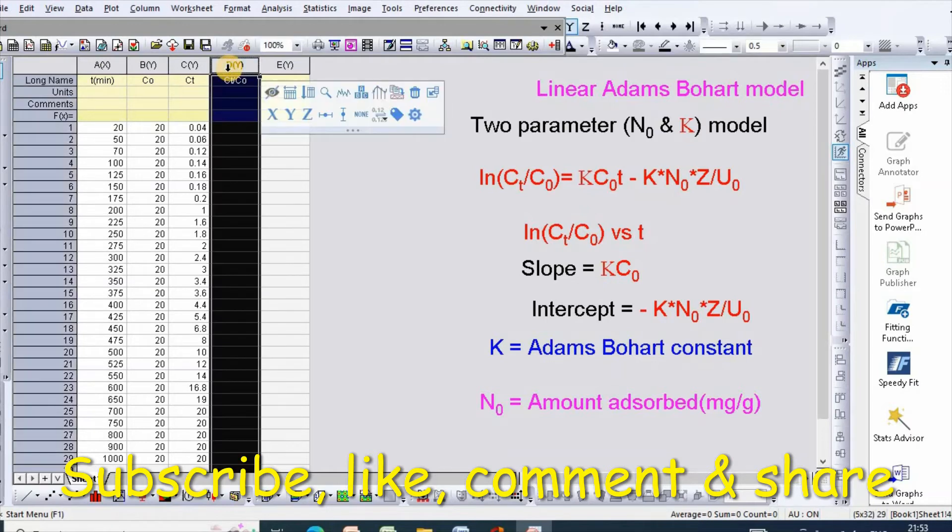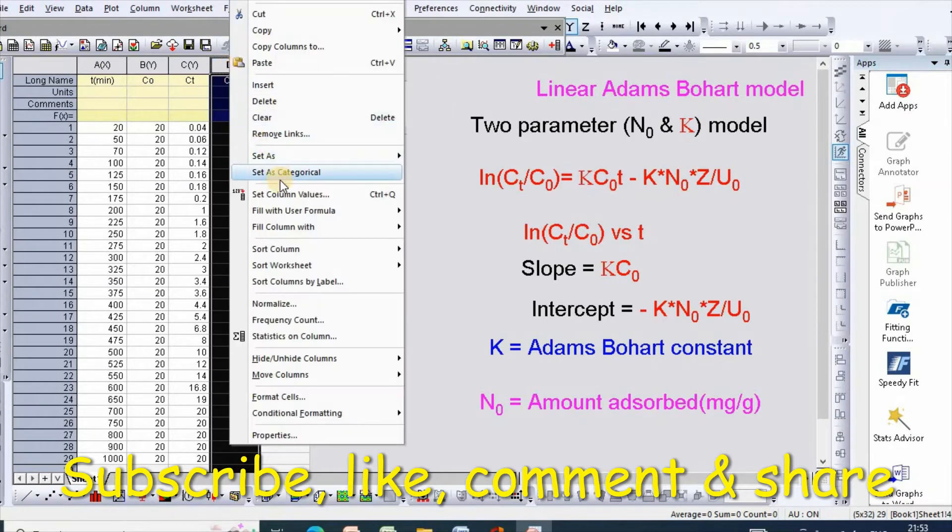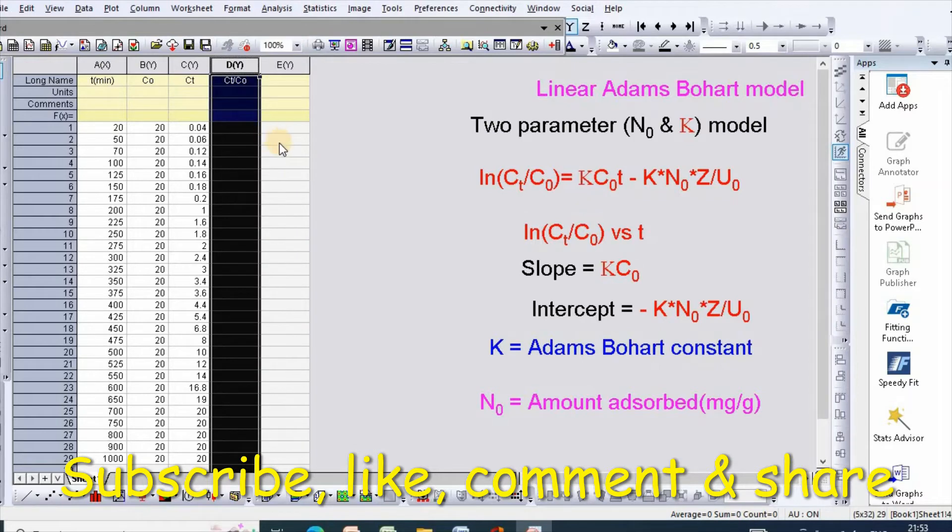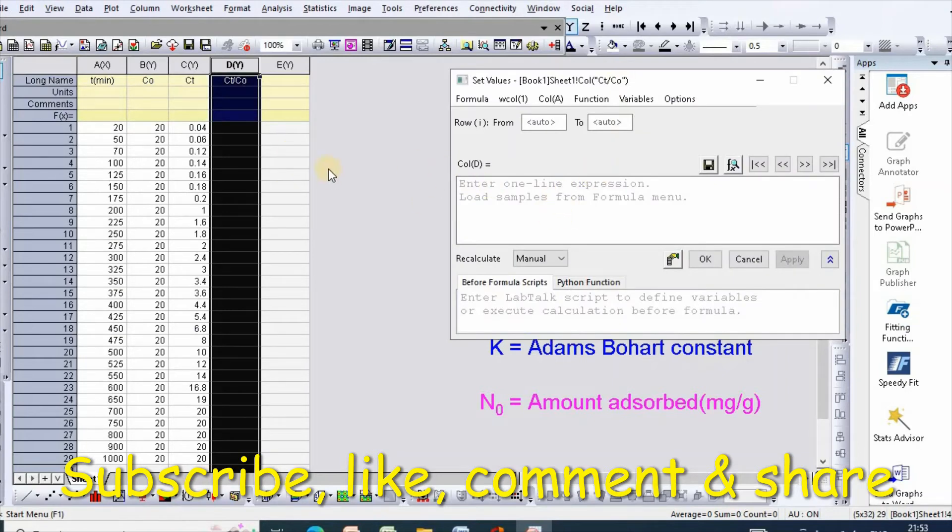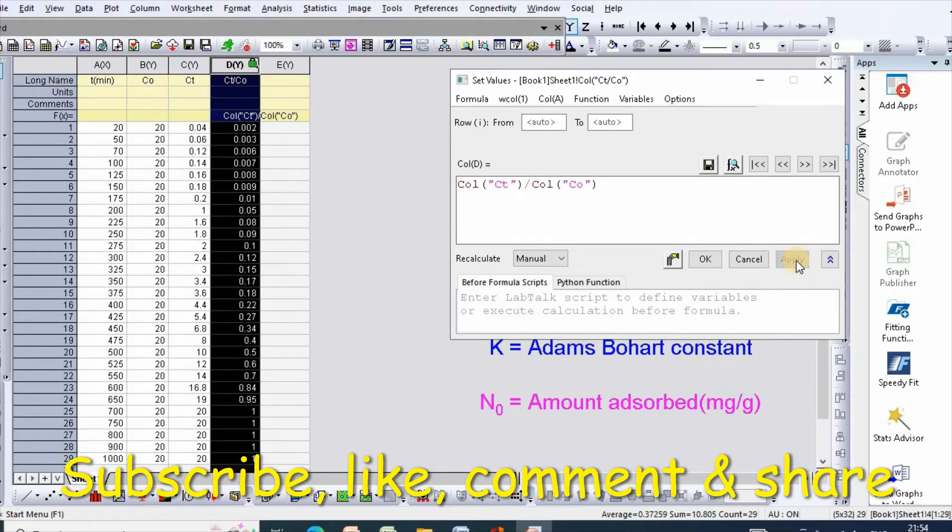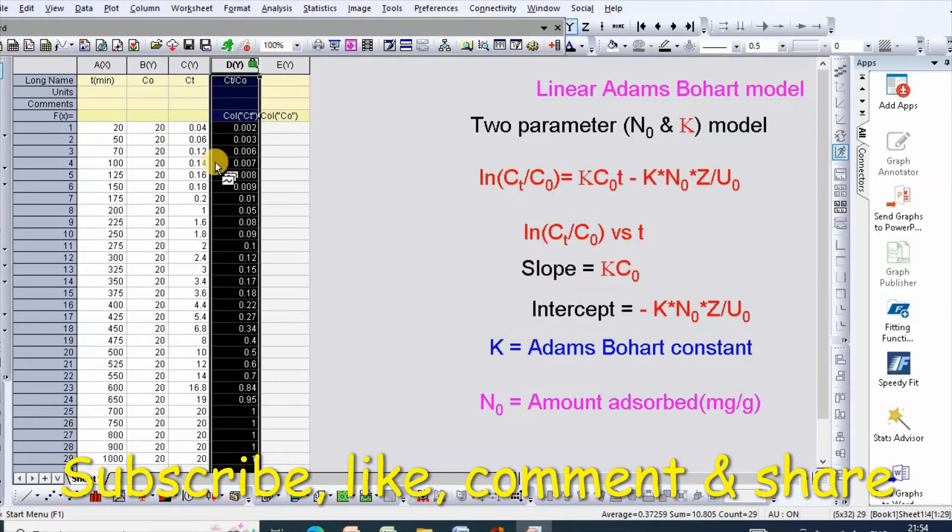Just right-click this and set column value. Then column C divided by column B. Then apply, then update. So here is your Ct by C0 value.